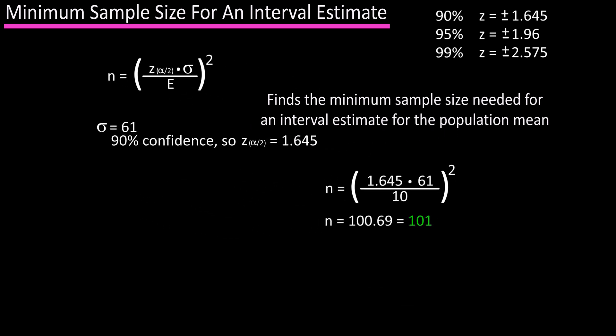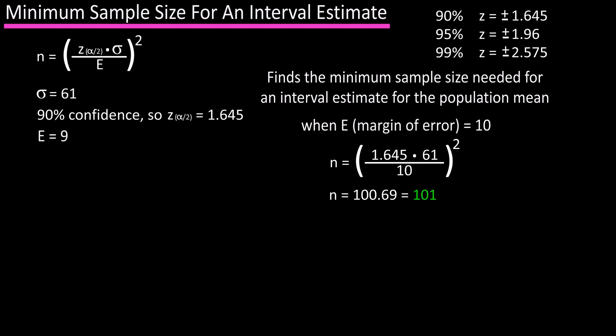Let's look at the same example, but using 9 as the margin of error, again with 90% confidence level. Plugging and calculating, we get 124.31, rounding off to 125.